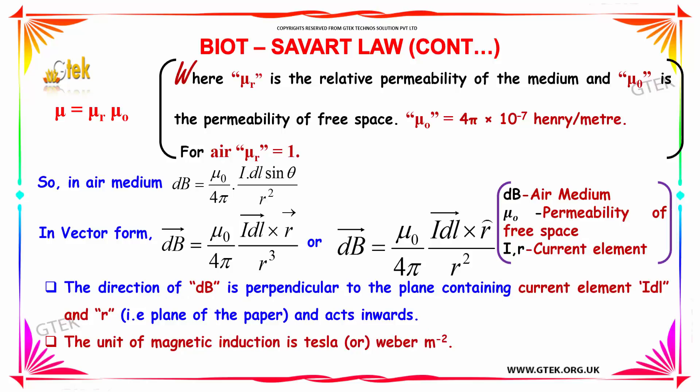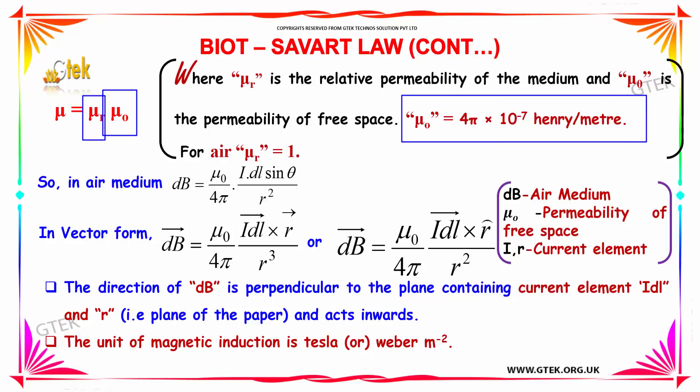The value of μ can be replaced with μ_R × μ₀, where μ_R is the relative permeability of the medium and μ₀ is the permeability of free space. μ₀ = 4π × 10⁻⁷ henry per meter. For free space, μ_R = 1, so in that medium the value is: dB = μ₀ / 4π × I × dL sinθ / R².